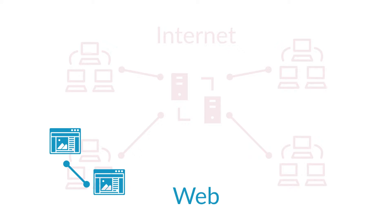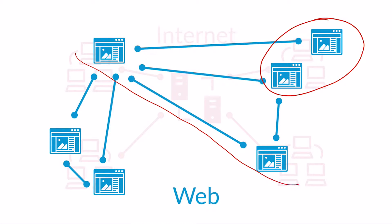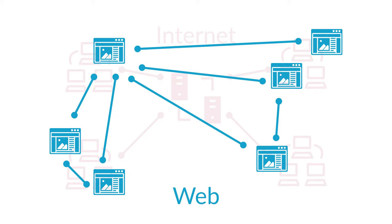Connections between pages are not physical connections like on the internet — they're hyperlinks that direct us from page to page. Two pages that are not linked at all might actually be very close together in internet terms; they could even be on the same computer. And two pages that are very tightly linked on the web, with lots of links pointing back and forth between them, might be housed on servers that are literally on opposite sides of the planet. Each page is little more than a file or set of files stored on a special kind of computer called a web server.